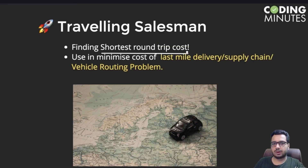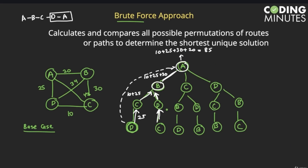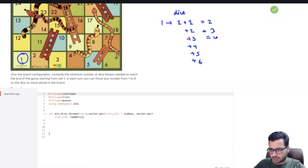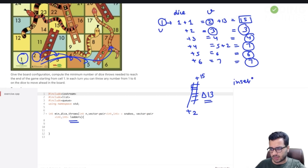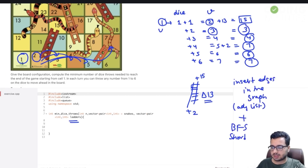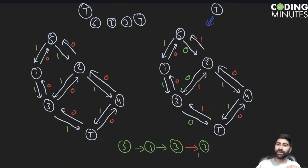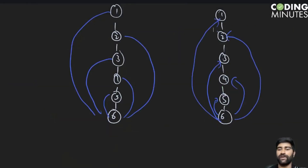We cover all graph algorithms starting from the very basics till the very advanced. The course is divided into two parts. Part one focuses on fundamentals and part two is designed for advanced programmers and hardcore competitive programmers. With over 100 plus coding lectures and dozens of coding exercises, our aim is to make sure that after this course you emerge as a graph champion.